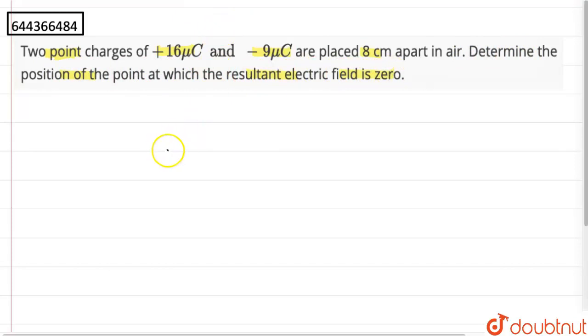We have two point charges. Let us name these points as A and B. The charges are +16 microcoulombs and -9 microcoulombs. The distance between them is 8 centimeters.